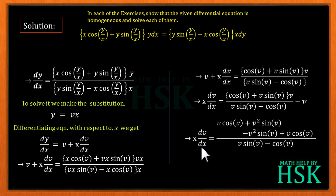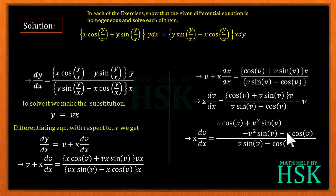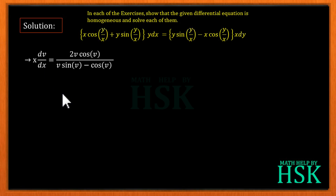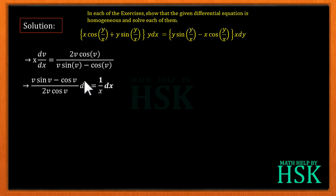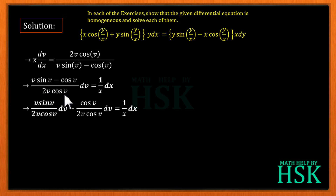Expanding and simplifying: x·dv/dx gives v·cos(v) + v²·sin(v) in the numerator. On combining with the fraction, the v²·sin(v) terms cancel, leaving 2v·cos(v) in the numerator over [v·sin(v) − cos(v)] in the denominator. Separating variables by cross-multiplication gives [v·sin(v) − cos(v)] / [2v·cos(v)] dv = (1/x) dx. Splitting the fraction: [v·sin(v)/(2v·cos(v))] dv − [cos(v)/(2v·cos(v))] dv = (1/x) dx.